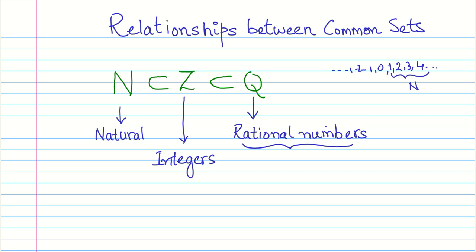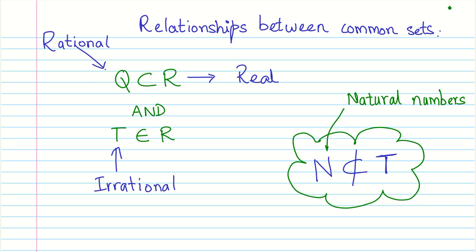Now this part says that rational numbers are a subset of the real numbers, and irrational numbers are also a subset of real numbers, because we define real numbers to be all the rational as well as irrational numbers. The other property is that natural numbers do not belong to the set of irrational numbers. These are the common sets and some of their most obvious properties.